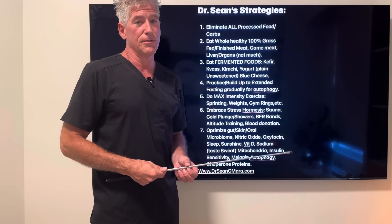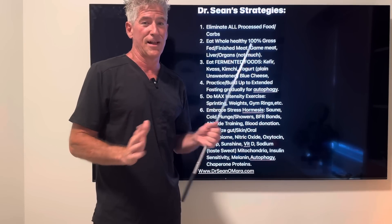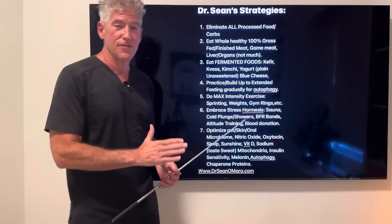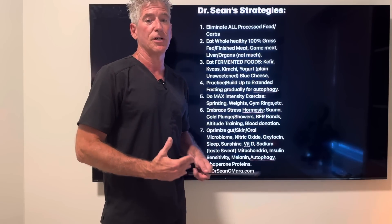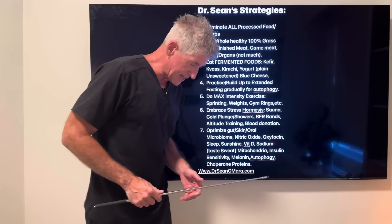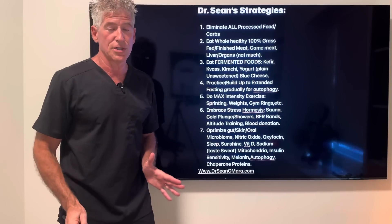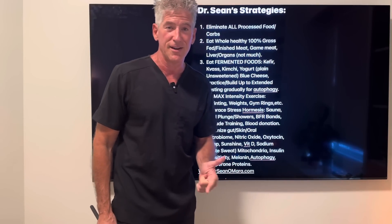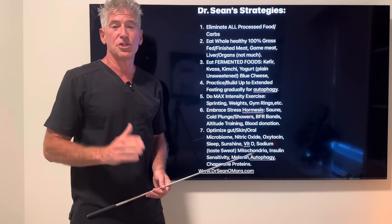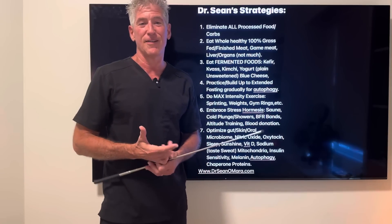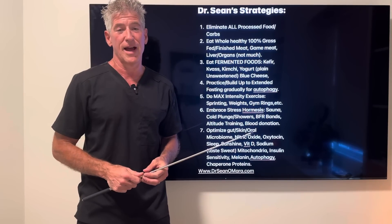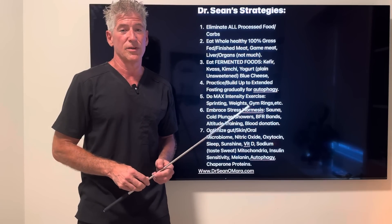Quite a few people have sent me messages saying they gained weight and fell apart when they started with fruit and honey. So be very careful. Watch for protrusion of your abdomen — that arc. Take photographs and analyze that. If you got started on fruit and honey or some other carbohydrate and you're falling apart, get started on these strategies and share them with somebody else who may also be gaining weight or gaining girth in their abdomen.